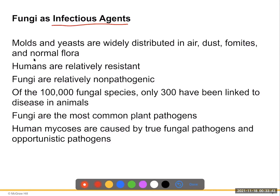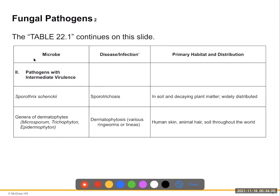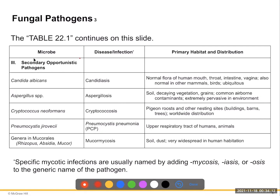Fungi are the most common plant pathogens. Human mycoses are caused by true fungal pathogens and opportunistic pathogens. We have primary or true pathogens, pathogens with intermediate virulence that are less potent, and secondary or opportunistic pathogens — those that take over when a patient is immunocompromised or there is trauma, creating an open niche where they can invade.